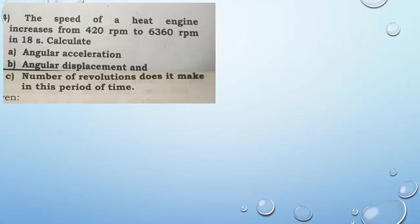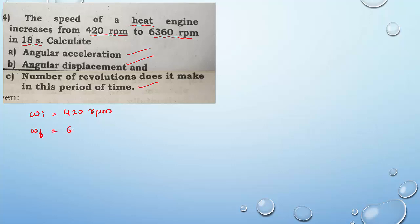Next question: the speed of a heat engine increases from 420 rpm to 6360 rpm in 18 seconds. Calculate: A) angular acceleration, B) angular displacement, and C) number of revolutions made in this period. The givens are: ωi = 420 rpm, ωf = 6360 rpm, time = 18 seconds. We need to find α, θ, and N.